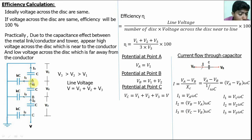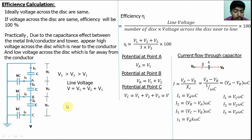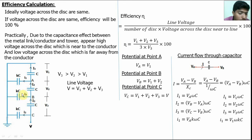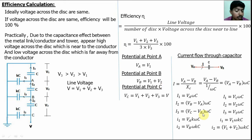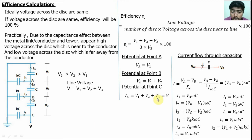Small i1 equals Va minus zero into K·jωC, so i1 = V1·K·jωC. Small i2 equals Vb into K·jωC, substituting Vb: i2 = (V1 + V2)·K·jωC. Similarly, i3 equals Vc minus zero into K·jωC, so i3 = (V1 + V2 + V3)·K·jωC. These are the current calculations for all capacitors.